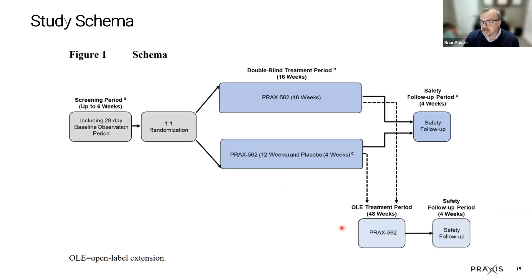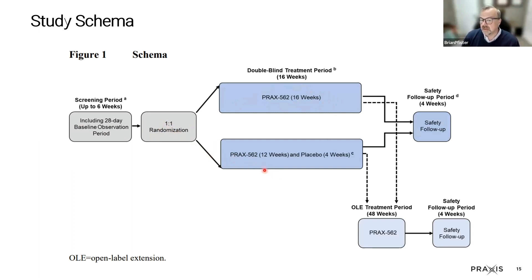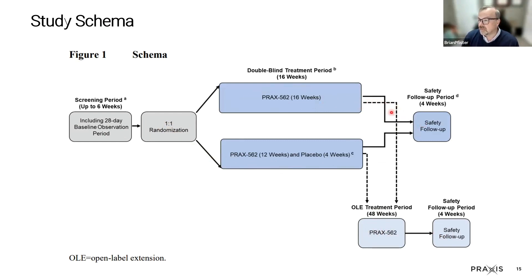Here's the study schema: there's a screening period with a 20-day baseline observation period to establish baseline seizure count. Patients are required to have at least eight seizures per month. Then they are randomized one-to-one to either 16 weeks of PRAX-562, or 12 weeks plus four weeks of placebo and PRAX-562. After completing the double-blind period, patients have the option to enter a 48-week open-label extension. At the end of that, if they decide to pursue another therapy, there is a four-week safety follow-up period.